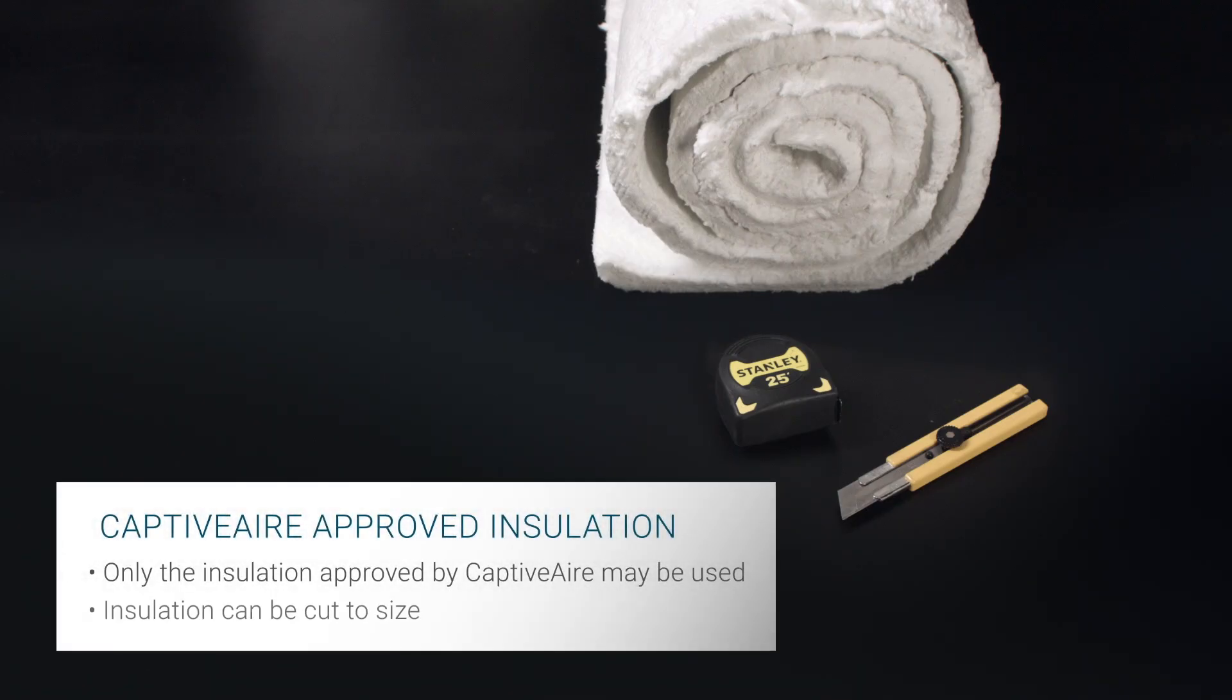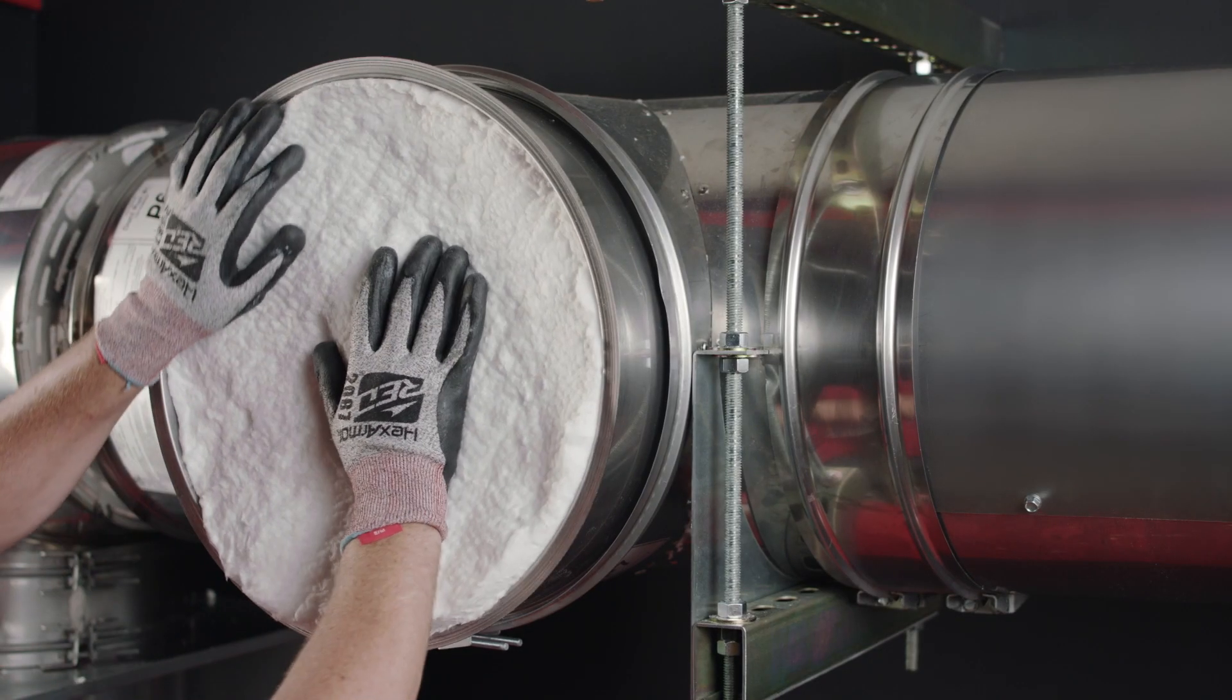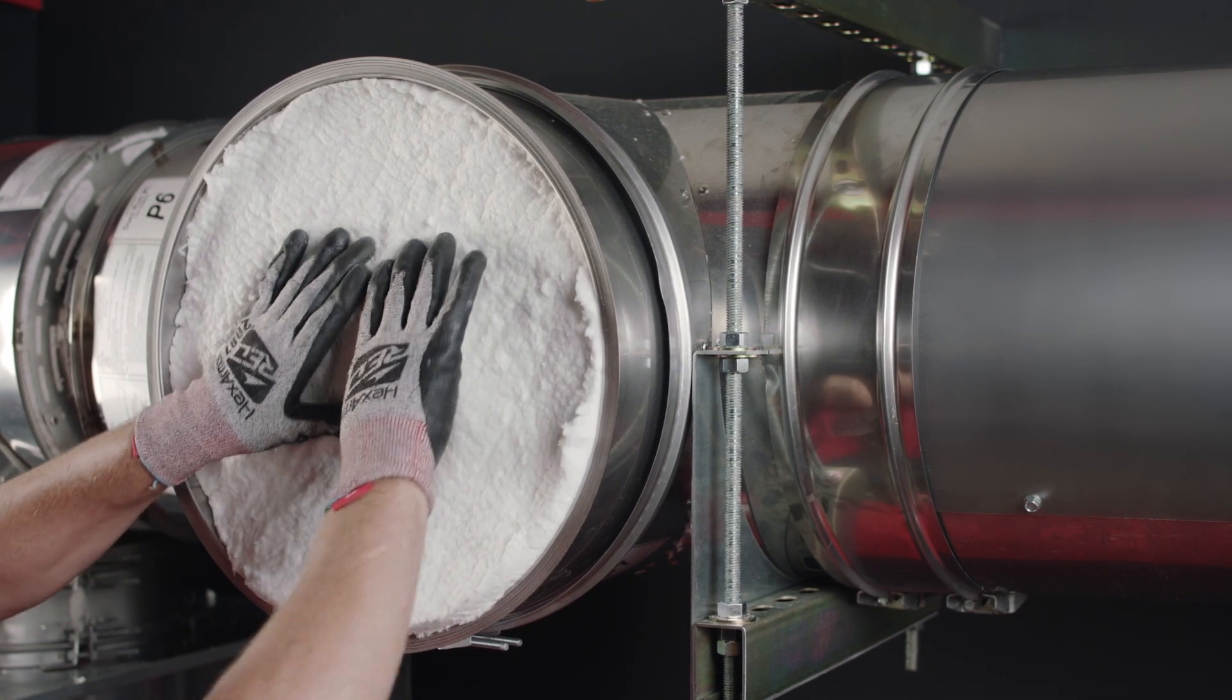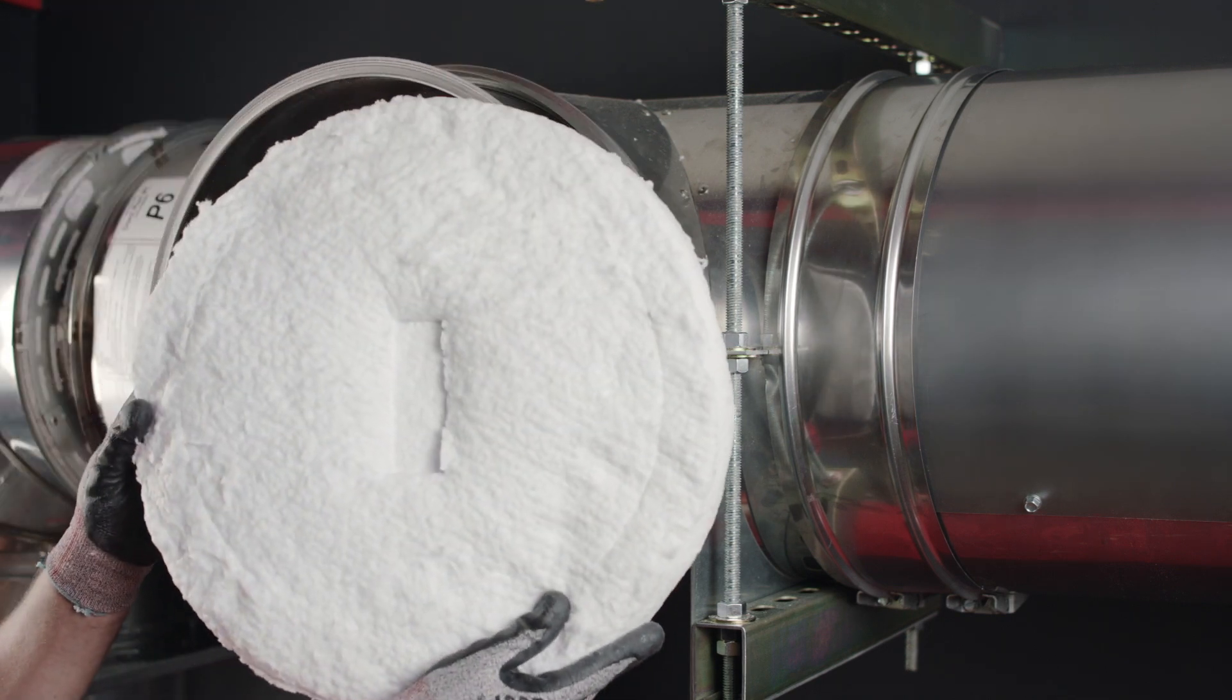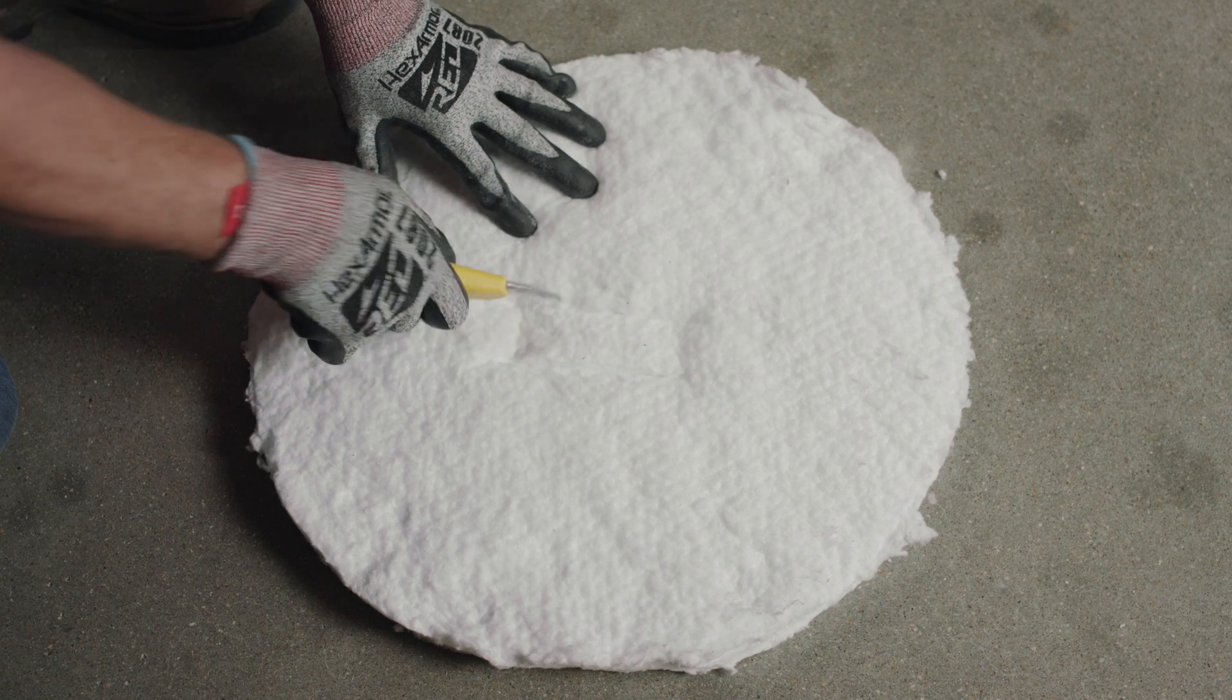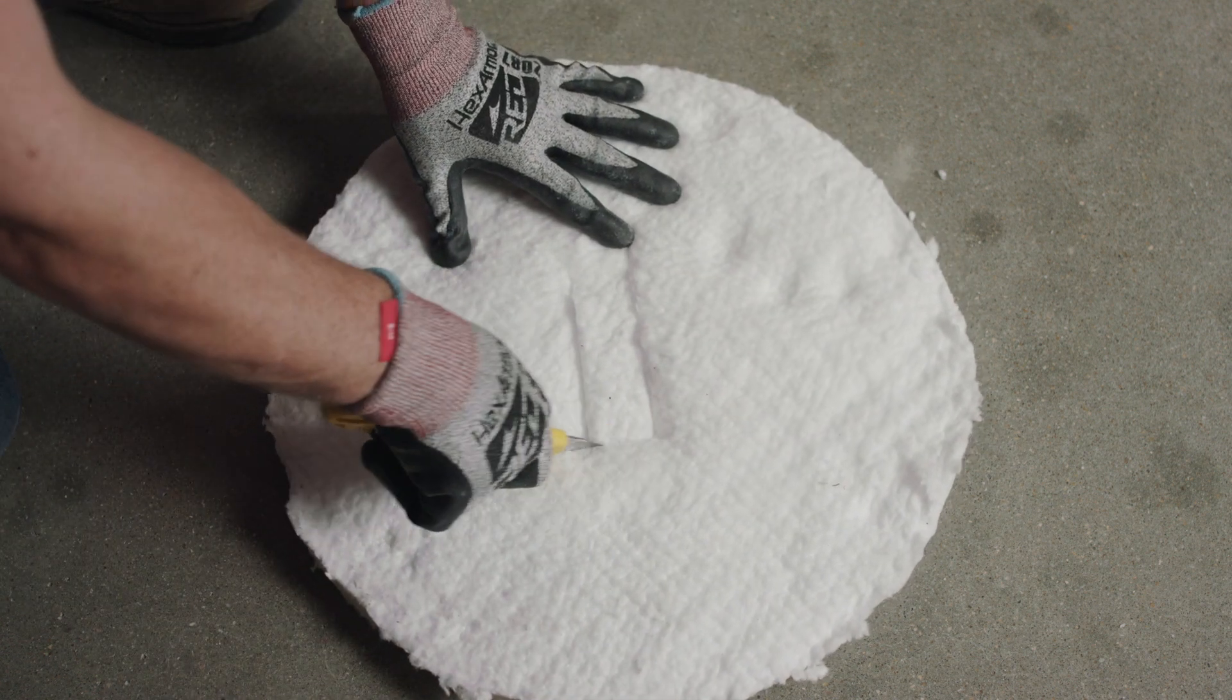Then cut three pieces of insulation to size. Take the first piece of insulation and press it firmly against the inner access door. This will leave an imprint that you can use as a guide to cut out the shape of the handle in the insulation, which will ensure a tighter fit with no gaps or air pockets.